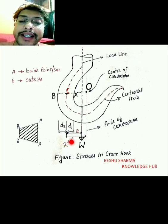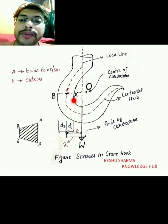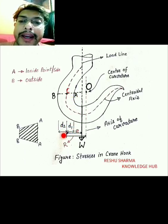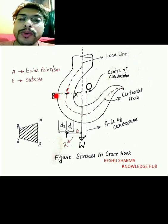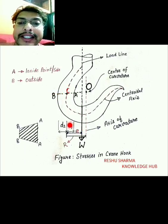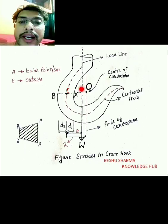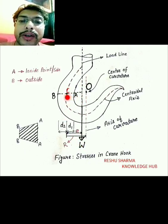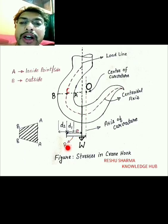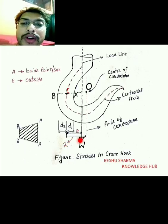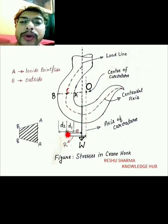D equals d1 plus d2, where d1 is from A to C and d2 is from C to B. E is our eccentricity — it is the distance between the load line and the centroidal axis. Then we have the radius of curvature R, which is the distance between the center of curvature (axis of curvature) and the centroidal axis.